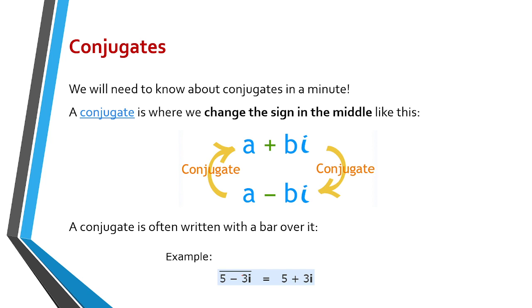So conjugates. We will need to know about conjugates in a minute. A conjugate is where we change the sign in the middle like this: a+bi is a conjugate of a-bi. Then also a-bi is a conjugate of a+bi. A conjugate is often written with a bar over it. So 5-3i is a conjugate of 5+3i.